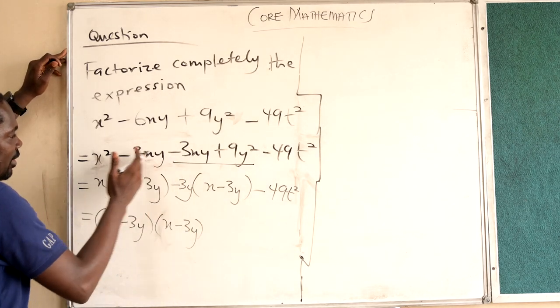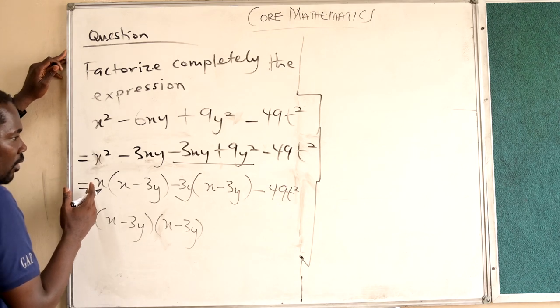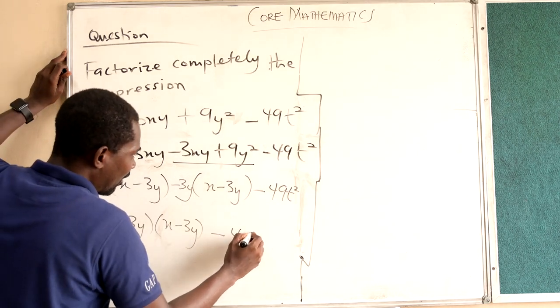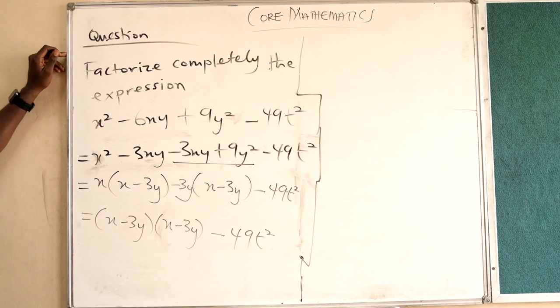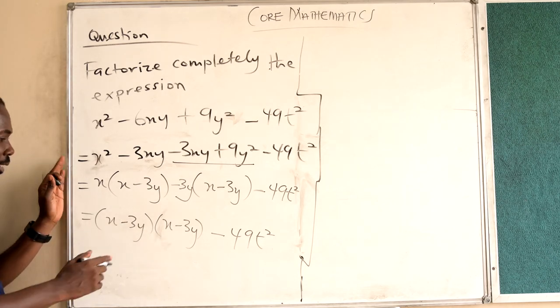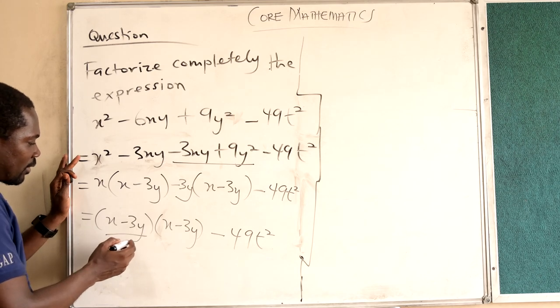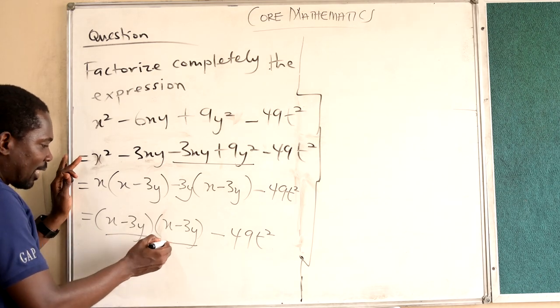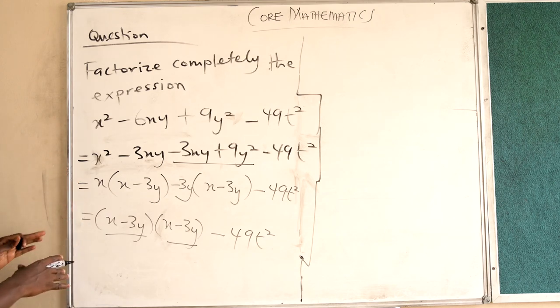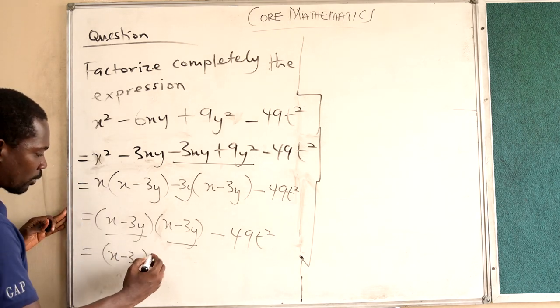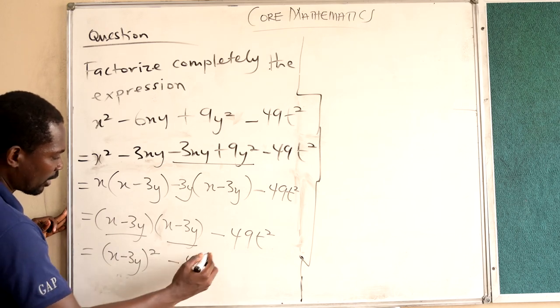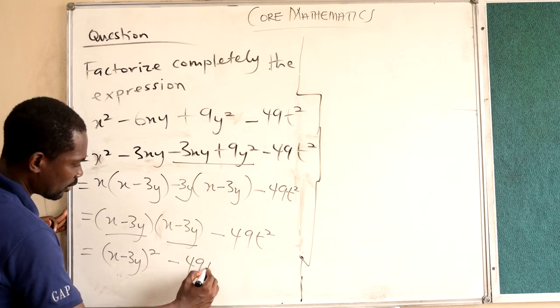So we are able to factorize the first four terms completely. But we still have the negative 49t squared attached to it. When you look at this closely, you realize that x minus 3y times itself is the same as x minus 3y squared. Then we can bring the minus 49t squared here.